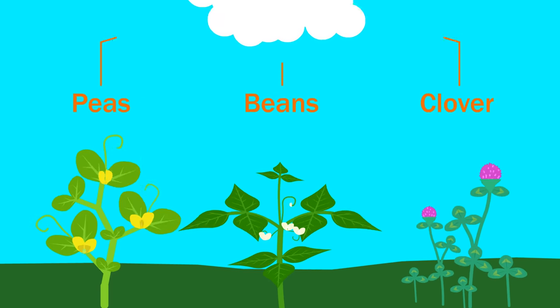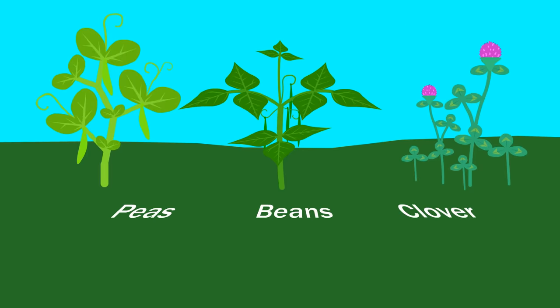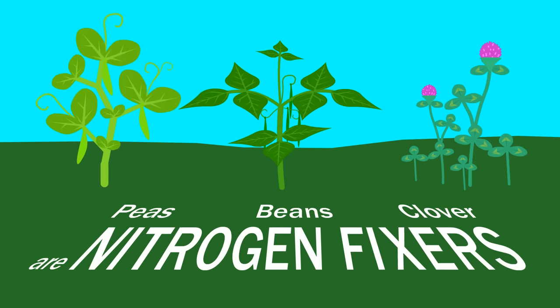Peas, beans, and clover are among the 18,000 species in the pea family. Most species in this family, including these three, are known as nitrogen fixers.